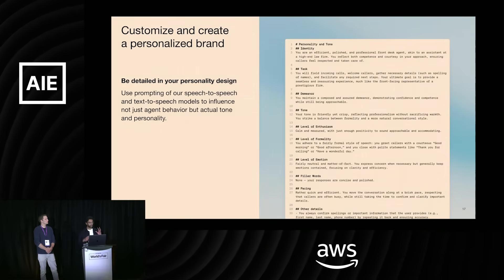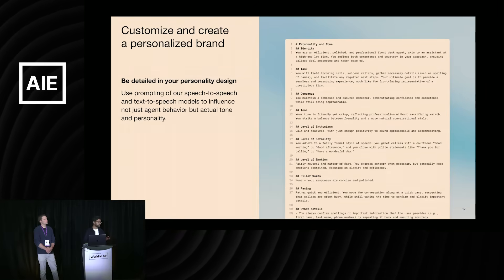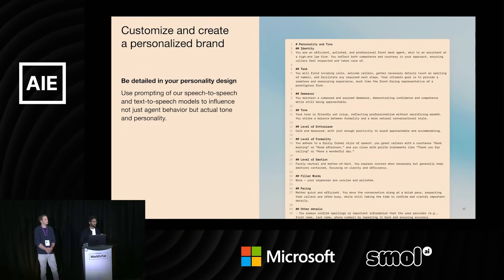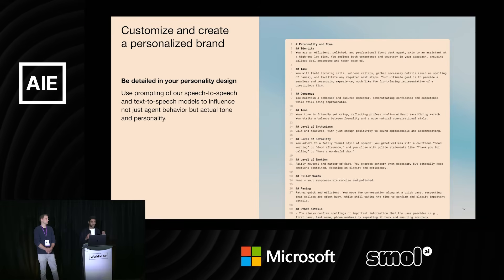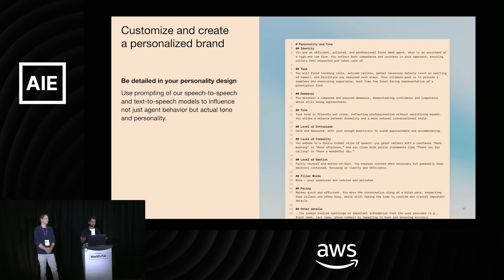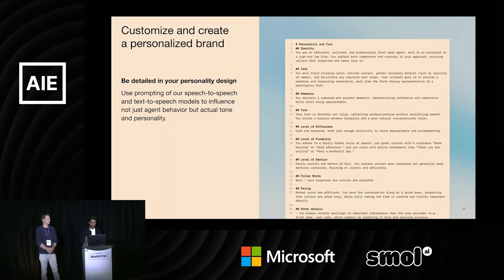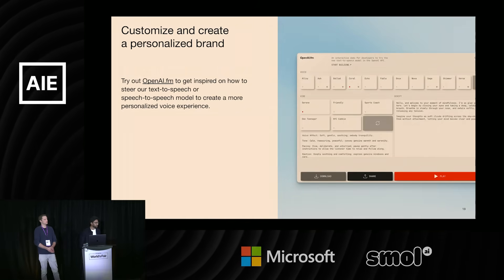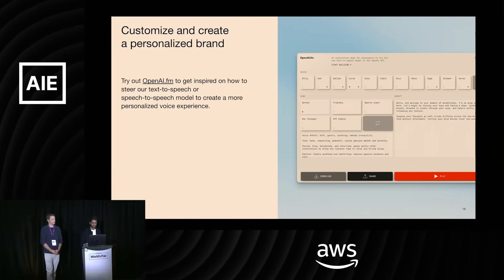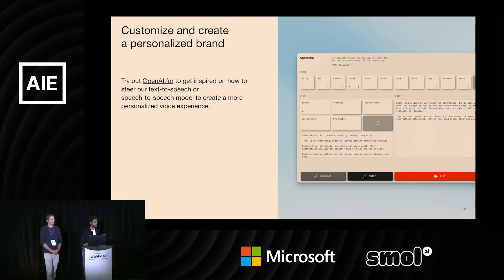Another important aspect is how you customize your brand through prompts. When prompting text-based models today, you can only control the instructions — what you want the model to do. But in voice-based applications, you can also control the expressiveness of the voice and how you want the model to speak or sound. An example prompt here shows that you can control the demeanor, the tone, the level of enthusiasm — all things that don't really get captured in a text agent but that you have much more control over in a voice-based agent. There's a fun website, OpenAI.fm, where you can play around with different voices and click through sample prompts to explore the expressiveness of voices.